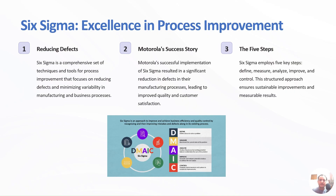Six Sigma is a set of techniques and tools for process improvement, introduced by Bill Smith at Motorola in the 1980s. It provides organizations with tools to improve the capability of their business processes. The increase in performance and decrease in process variation leads to defect reduction overall, and it improves profit, employee morale, and quality of products or services. Six Sigma is based on the idea that all business processes can be measured and optimized.